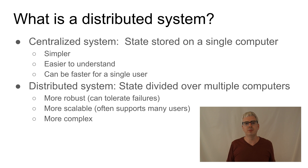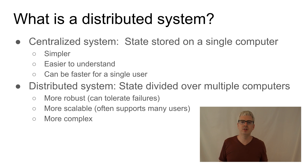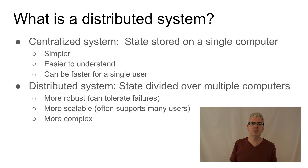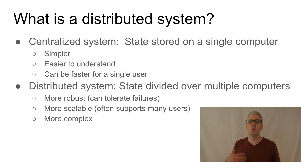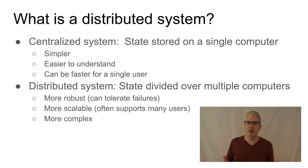Centralized systems are simpler — they're easier to understand because you only have to consider what's going on in a single computer. They can be faster for a single user because there are no network round trips involved. But a distributed system, by contrast, can be more reliable: if a computer fails, that doesn't mean you're doomed. You can keep on working for many types of failure. A distributed system also tends to be more scalable — you can serve more users with a smaller number of computers due to the luxury of time sharing. The downside is they're more complex.